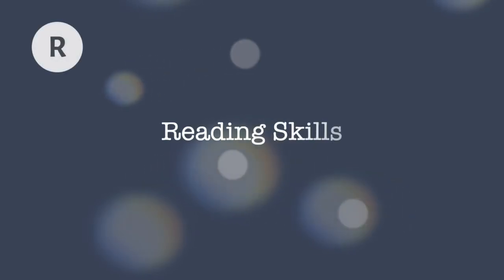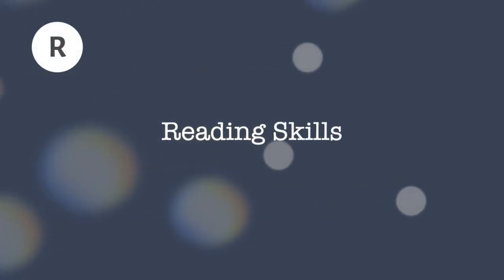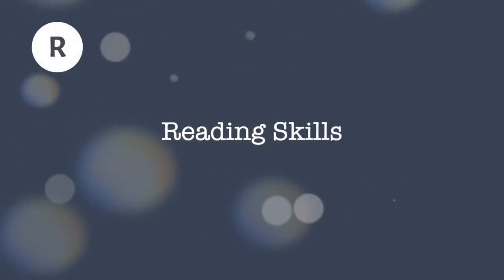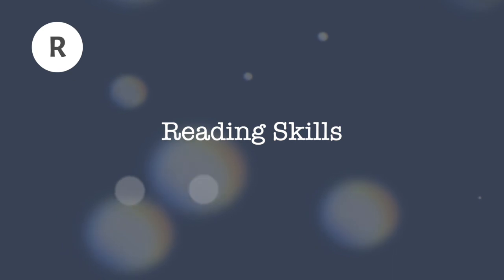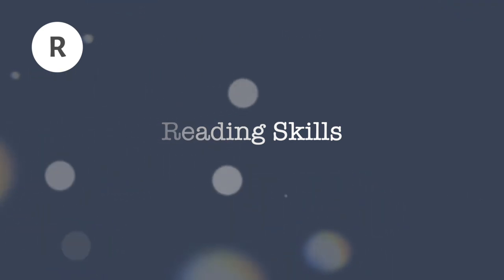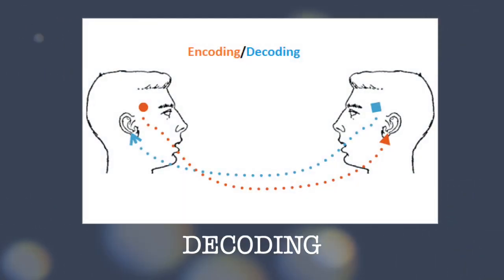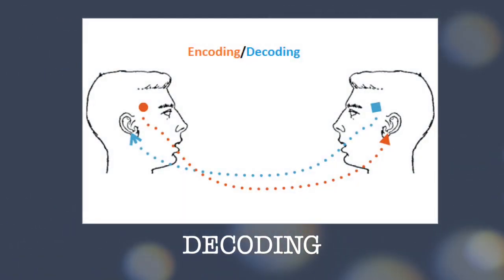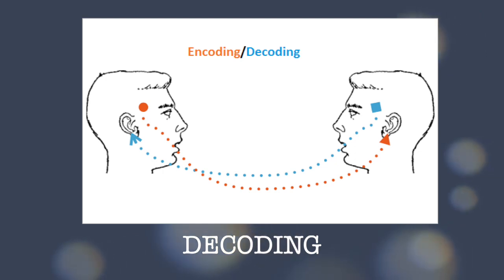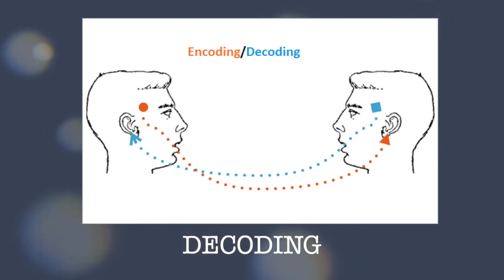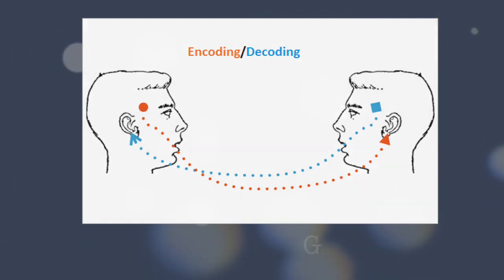Reading skills are important because students need to have a quick way of learning and absorbing text that they will apply later on in life. Decoding is the ability to apply your knowledge of letter-sound relationships, including knowledge of letter patterns, to correctly pronounce written words.